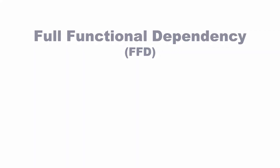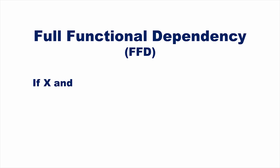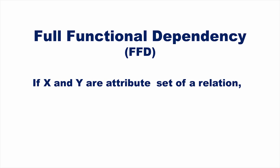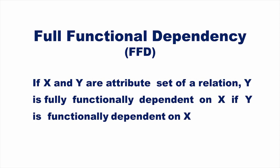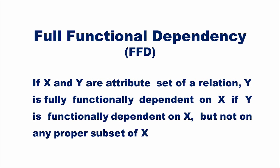Let us now look at the formal definition of fully functional dependency. If X and Y are attribute sets of a relation, Y is fully functionally dependent on X if Y is functionally dependent on X but not on any proper subset of X.